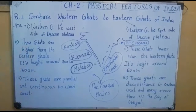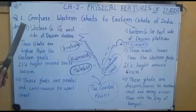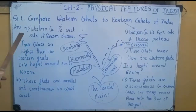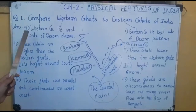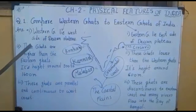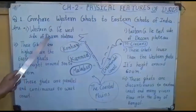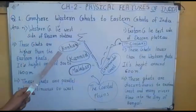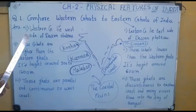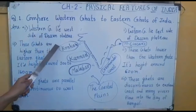The first point we are writing is the location of Western Ghats — where is the location of Western Ghats? The name says it all: Western. Western Ghats lie towards the western part of India, meaning this is the western side of the Deccan Plateau. We had already studied the Deccan Plateau, so Western Ghats lie on the west side of Deccan Plateau.